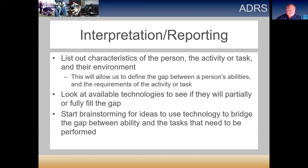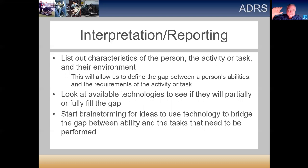After the evaluation, we produce a report which may include designs if it's a custom device. We look at the characteristics of the person, the activity they're performing, and important environmental information. We identify what the physical, cognitive, and sensory abilities of the person are and what abilities are necessary to perform the task. We're looking at the gap between those two things and trying to design a system or product that will fill that gap — using technology to increase their abilities closer to the requirements of the task.